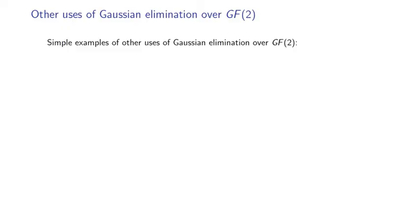Here are some other fun things to do with Gaussian elimination over GF2. We can solve lights out puzzles. We can attack Python's pseudo-random number generator.